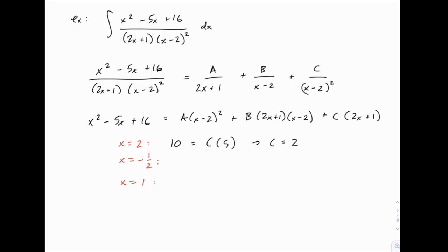When x equals negative 1 half, that makes things a little bit more complicated on the left side, because we'll have 1 fourth minus 5 times negative 1 half, so plus 5 halves, plus 16, and then on the right side, anything with a 2x plus 1 will cancel, so those are both gone, leaving just a times x minus 2 squared, so negative 1 half minus 2 will be negative 5 halves, and when you square it, you get 25 fourths.